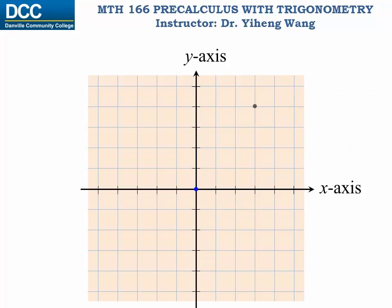Therefore, this point can be represented by the ordered number pair (3, 4). The x-coordinate represents the location as three units to the right of the y-axis, and the y-coordinate represents the location as four units above the x-axis.